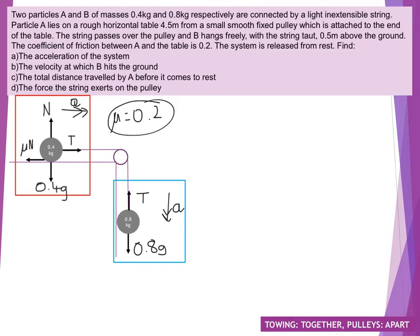Starting off, we might want to first look at the blue section because it does look that much simpler. So looking at the blue particle, resolving downwards in our direction of acceleration: 0.8g minus T equals 0.8A. Unfortunately, we can see we've got two unknowns straight away, so we are going to need to do some secondary equations for the red particle as well.